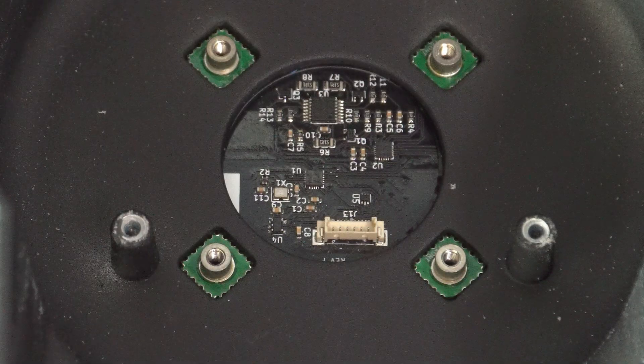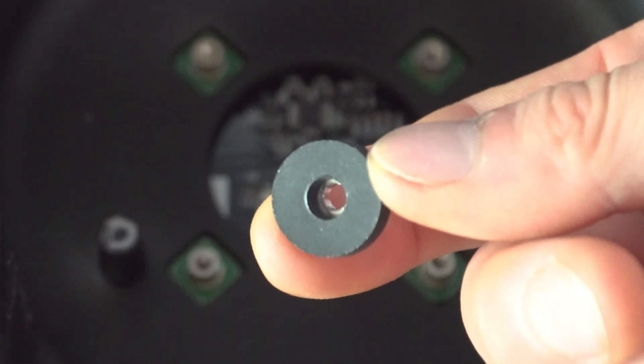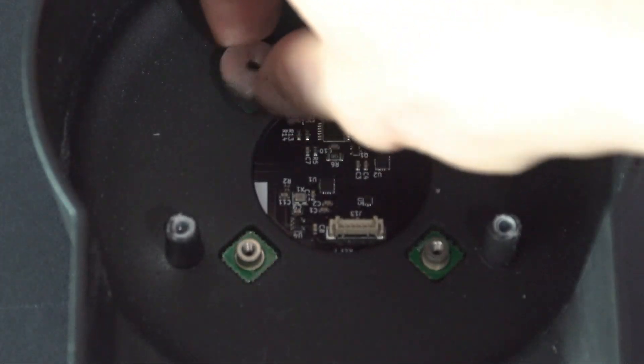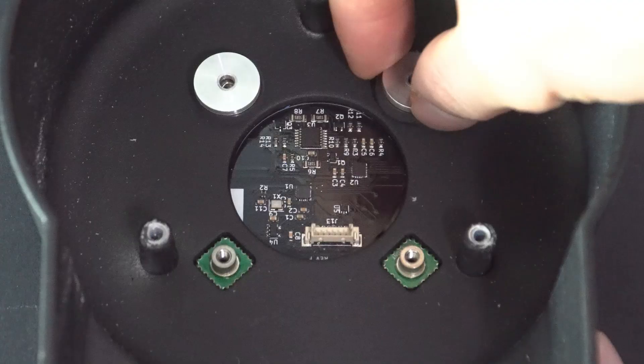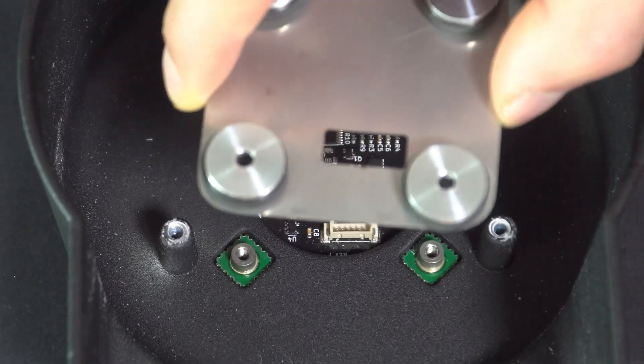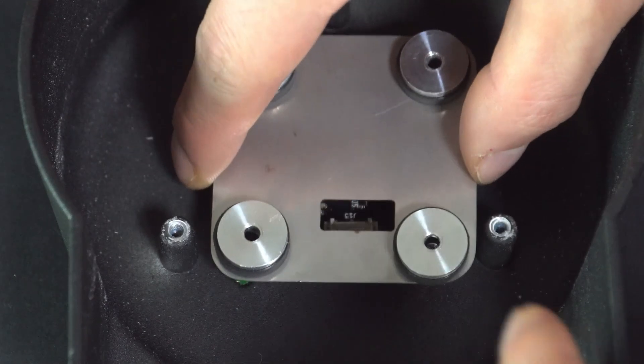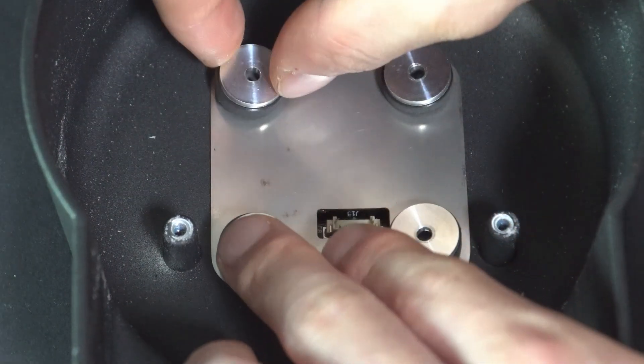If your machine doesn't have a seal plate, place the four spacers over the screw holes on the GHC board. If your machine has a seal plate, position the plate with the spacers over the screw holes.